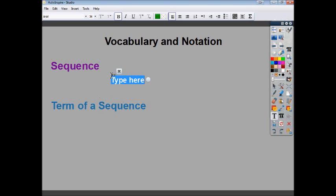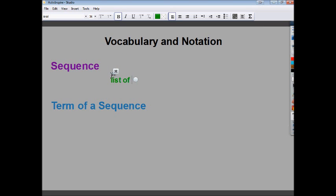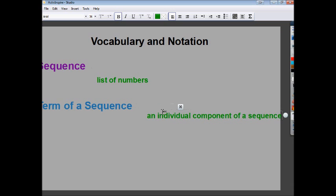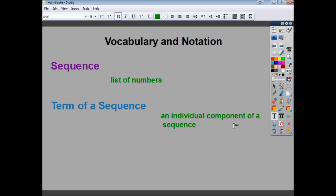When I'm talking about a sequence, I'm just talking about a list of numbers. Any list of numbers is fine. Terms of a sequence would be an individual component of a sequence. Now, let's make a sequence, a really simple one.